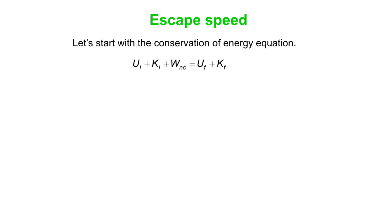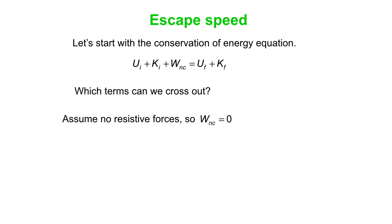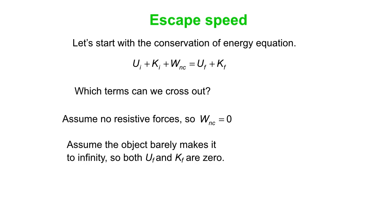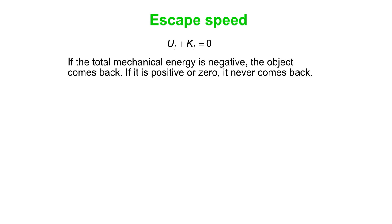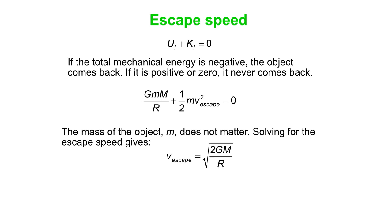Here's our energy conservation equation. No resistive forces, so the work done by non-conservative forces is zero. Assume the object barely makes it to infinity, so both the final potential energy and final kinetic energy are zero. We get U_i plus K_i equals zero — which works because U_i is a negative number. At the Earth's surface we have negative potential energy and an equal amount of positive kinetic energy; infinitely far away, all energy is zero, and the total in both cases is zero. Plugging in values: minus GMm over r equals one-half m v_escape squared. Solving for v_escape, the mass of the object cancels, and escape speed equals the square root of 2G times the mass of the planet divided by the radius of the planet.